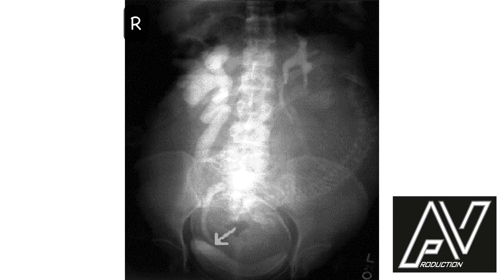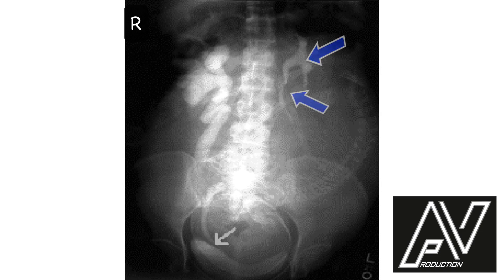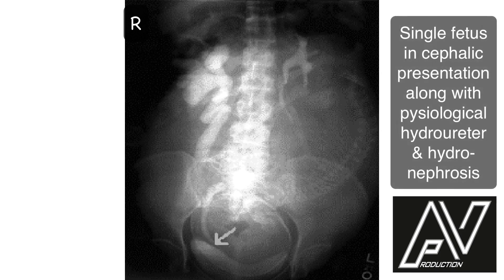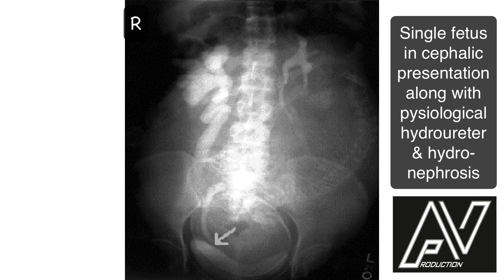This is a special x-ray — intravenous urography — showing AP view of the abdomen and pelvis, well exposed, well centralized. Both the ureters and pelves of the kidneys show dilatation. The right side dilatation is very much more than the left side. Besides this, a single fetus in longitudinal lie, flexed attitude, cephalic presentation is also seen. The white arrow shows compression of the bladder by the fetal head. Therefore, my diagnosis is single fetus in longitudinal lie, cephalic presentation, along with physiological hydroureter and hydronephrosis as a result of pressure.